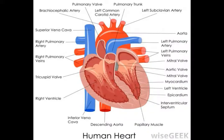The bovine aortic arch variant, frequently known as the bovine arch, is an abnormality in the aortic arch branching of the human heart. The variant is characterized by a deviation in the standard branching pattern, which normally involves separate origins for the three major branches.